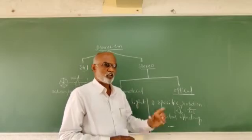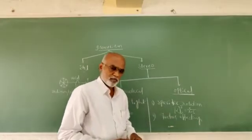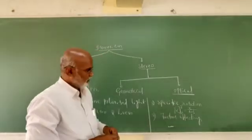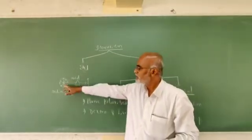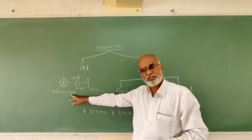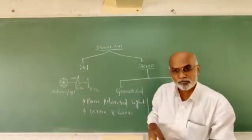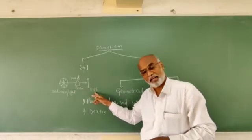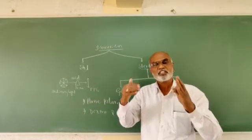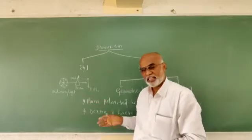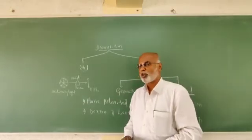If any two compounds differ in the direction of rotating the plane polarised light, such compounds are called optical isomers and the phenomenon is called optical isomerism. Before going into detail, let us learn about what is plane polarised light. Any light coming from a source is ordinary light with vibrations in all 360 degrees. When such ordinary light is passed through a Nicol prism, the light coming out will have vibrations in only one plane — this is called plane polarised light. Any compound capable of rotating plane polarised light is said to be optically active.